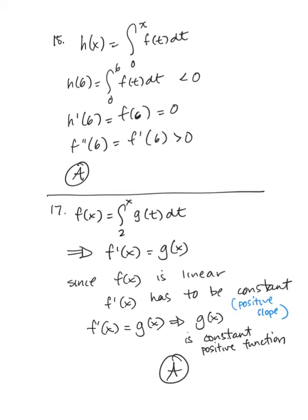In number 15, we're given a graph where a portion is below the x-axis and a portion is above. We're asked to compare h of 6, h prime of 6, and h double prime of 6. Since h of 6 is the area from 0 to 6, it's going to be negative because it's area underneath the curve. h prime equals f of 6, which from the graph is 0. h double prime of 6 is f prime of 6 — slopes — which are positive. So our choice is A, ordering from least to greatest. In number 17, we're given the graph of f, and we know f prime equals g. Since f prime represents slopes of the given graph and they're always positive, g of x is a constant positive function — choice A.